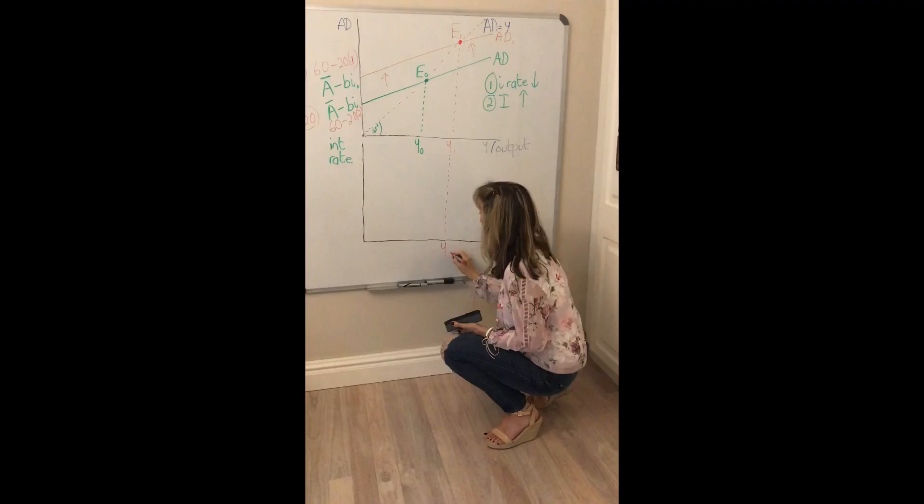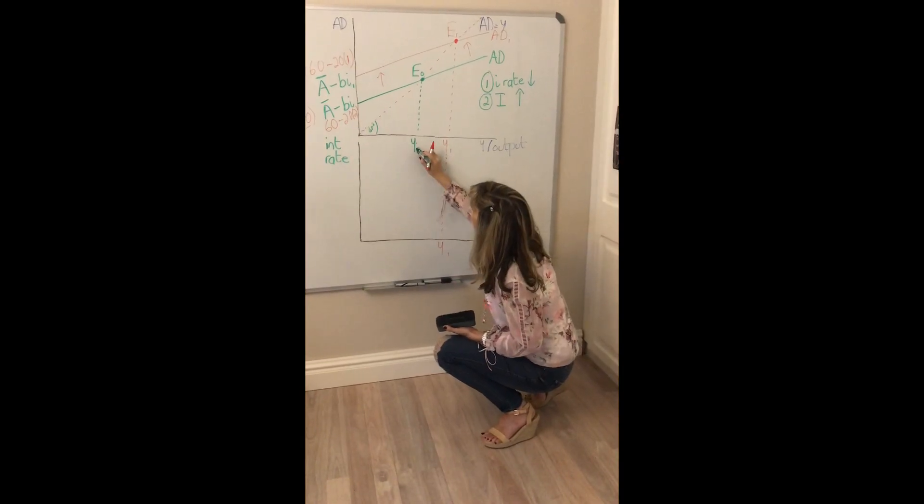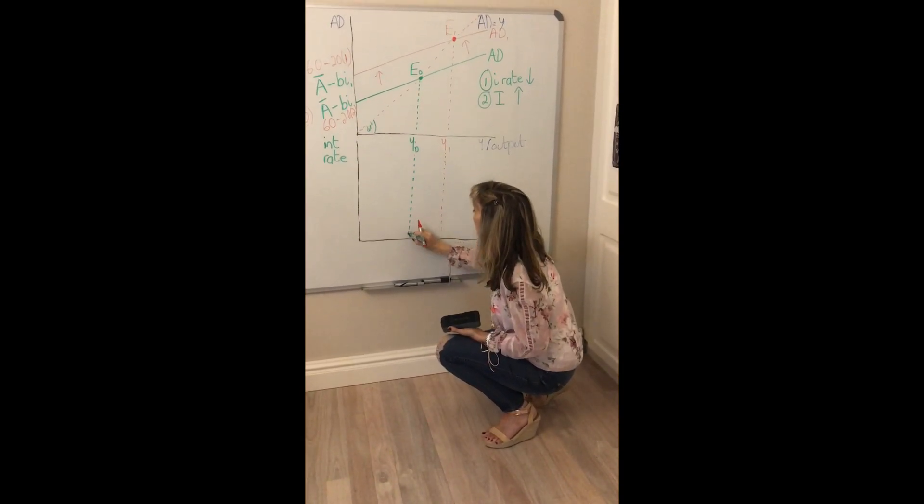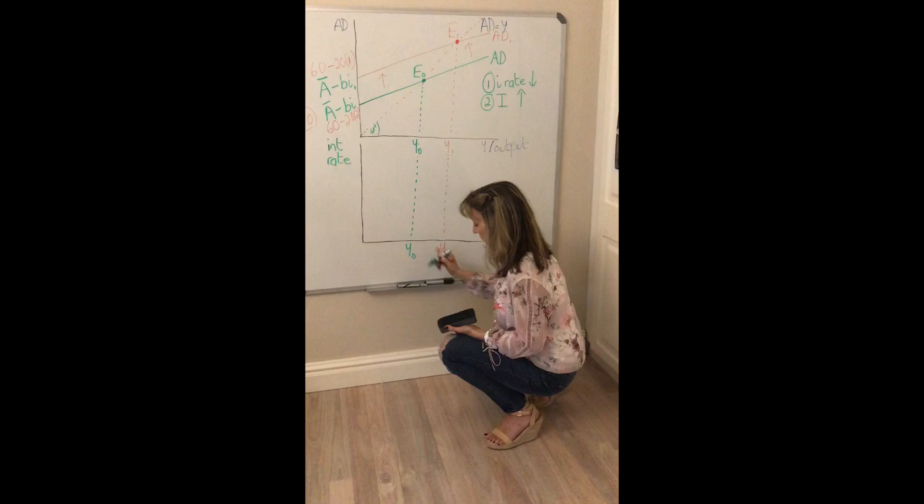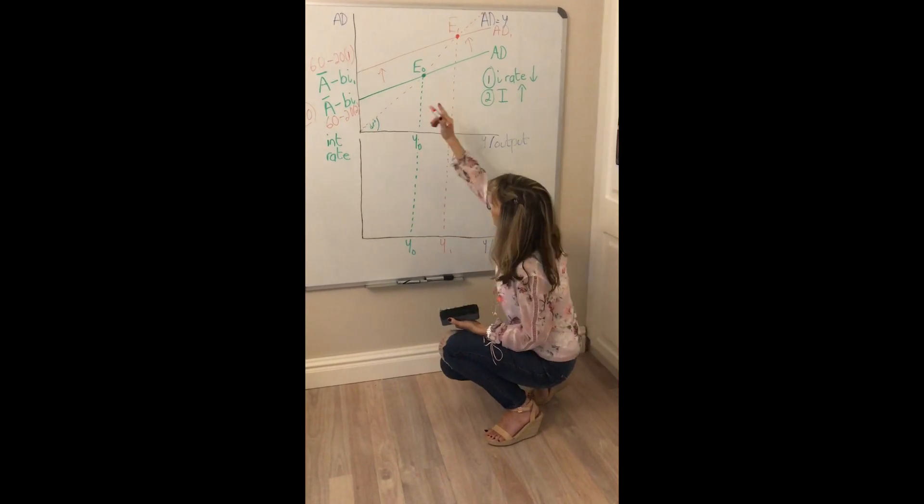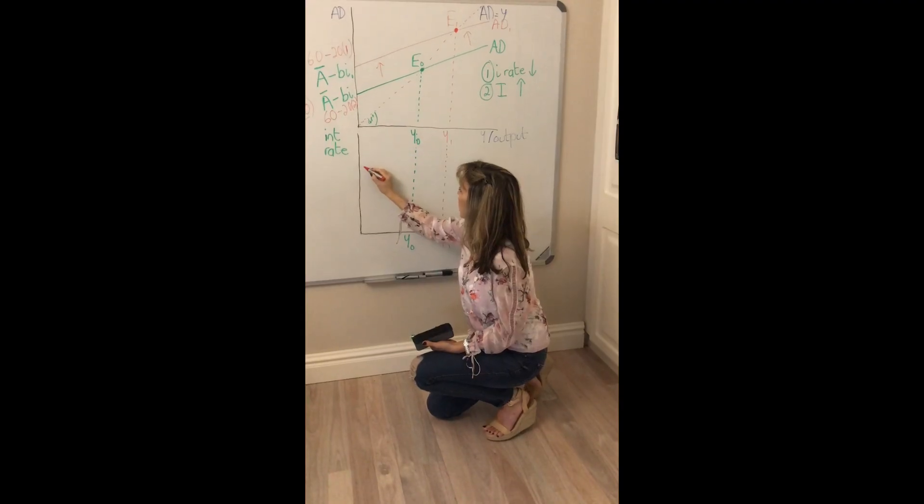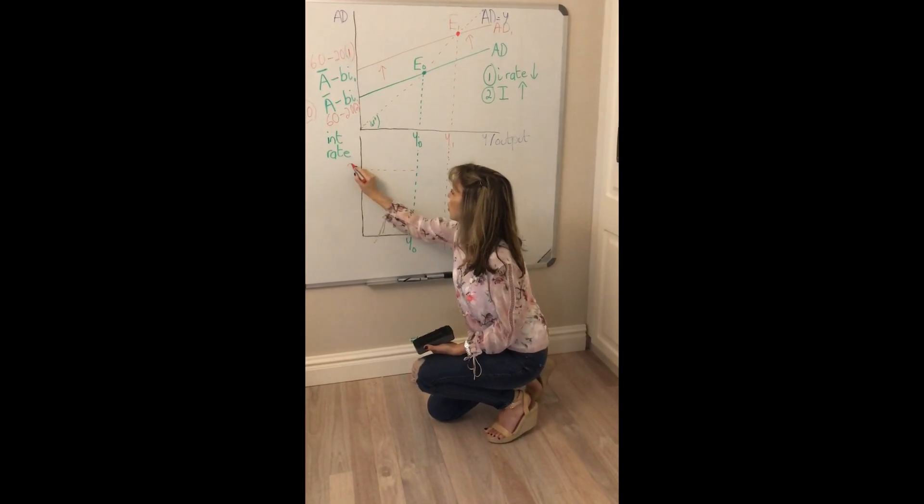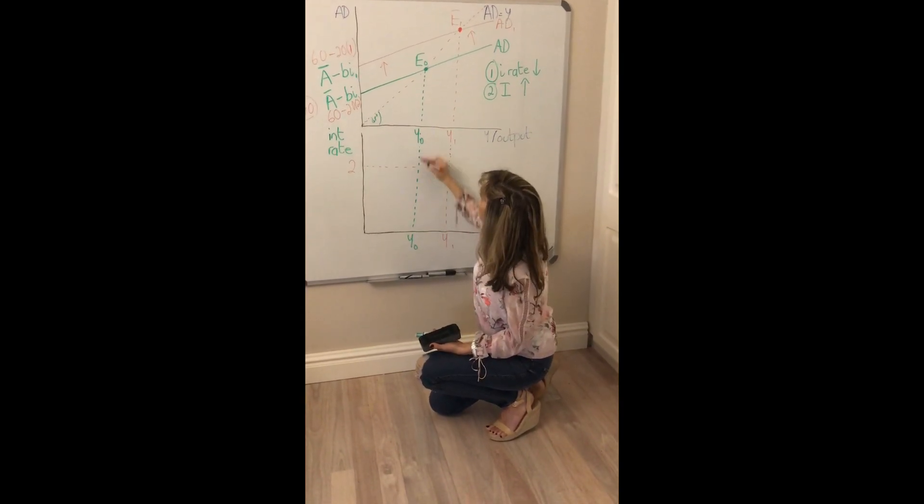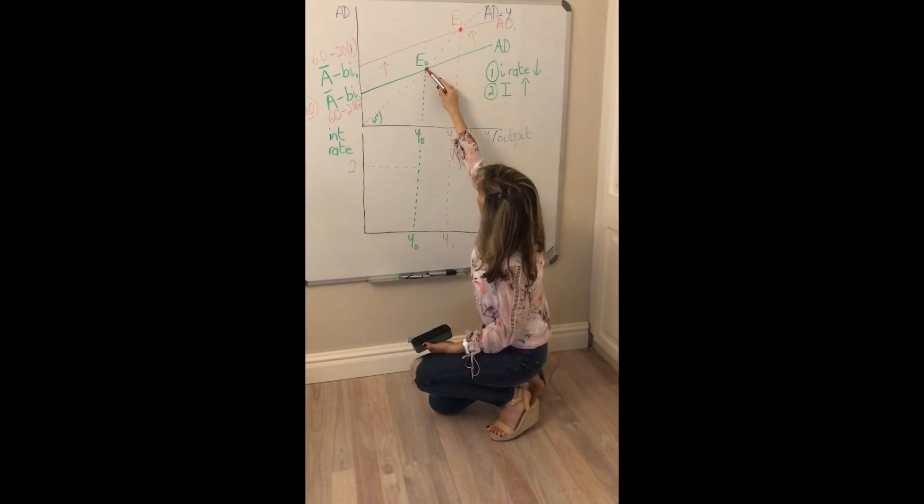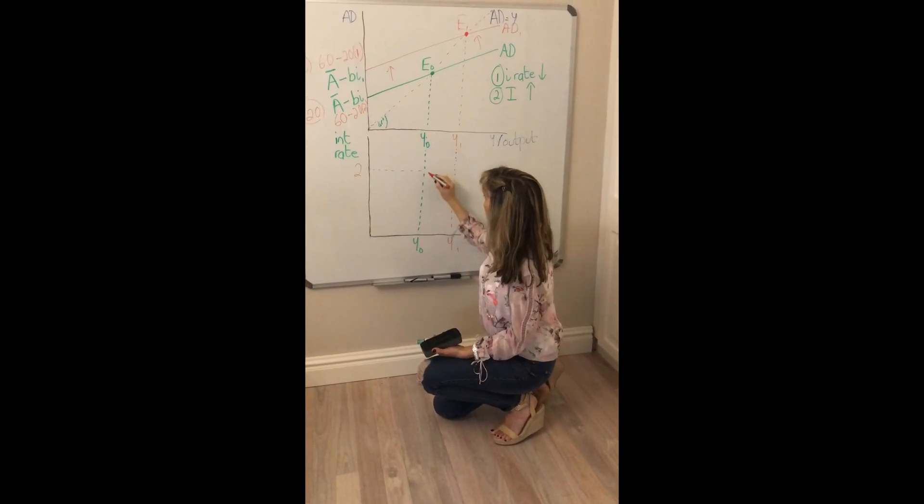We've got income or output. So let's trace that level of income down, call it Y1, trace this level of income down and call it Y0 to begin with.